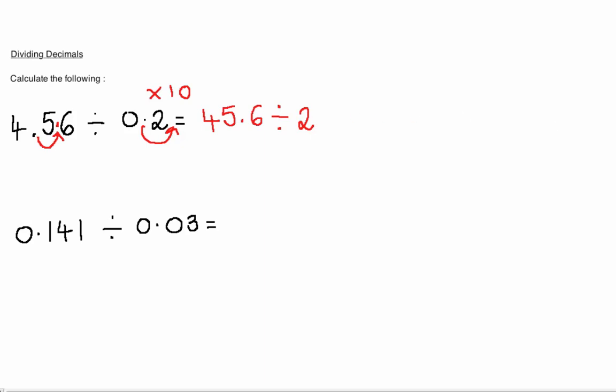To calculate this, it is far easier to write it in the alternative way. So, 45.6 is the number that we are dividing into, and the 2 goes in front.